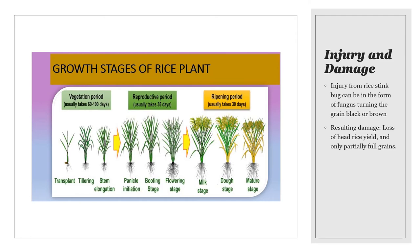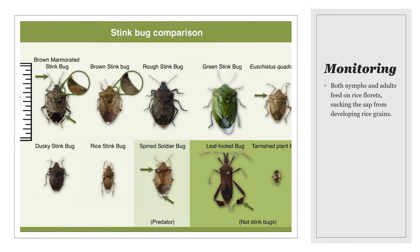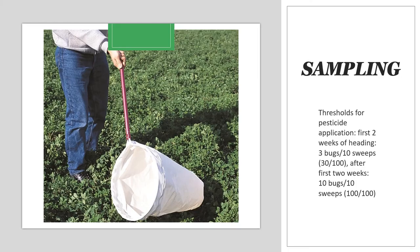This fungus causes black or brown coloration to the grain. Monitoring of the rice stink bug should occur at about 50 to 75 percent heading of the rice panicles. A suggested method of sampling is to use a 15-inch sweep net like the one pictured. You can take 10 sweeps at 10 different locations and count the number of stink bugs in each of the 10 sweeps.